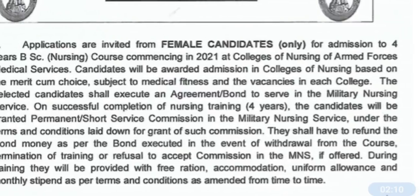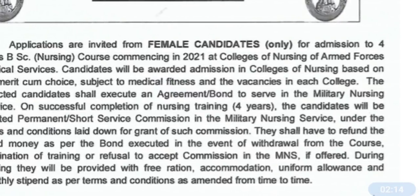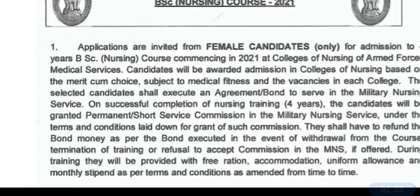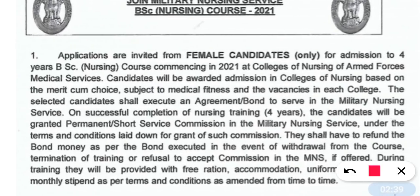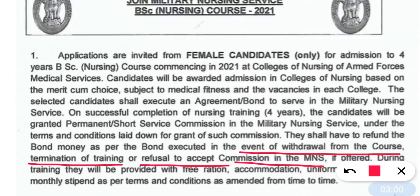Here you have to fill a bond as a security. When you get admission, you have to fill a bond as a security. That bond will be refunded in three cases: first, in the event of withdrawal from the course; second, upon termination of training when your training is complete; and third, if you refuse to accept the commission in MNS or don't want to complete the training. So in these three cases, your bond will be refunded.